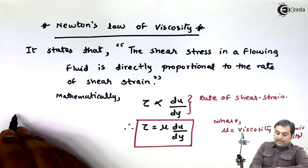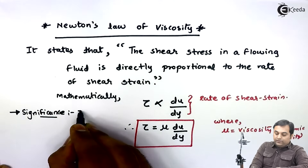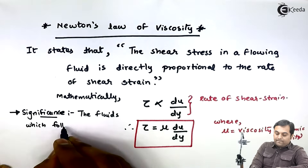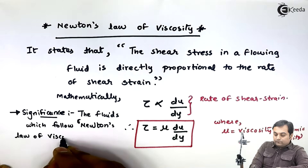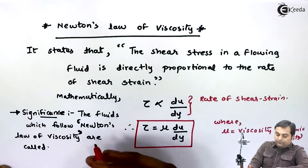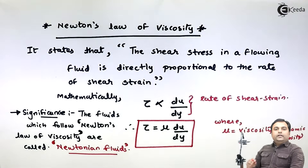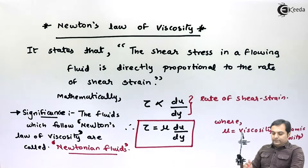This relationship is called Newton's law of viscosity. Its significance is that fluids which follow Newton's law of viscosity are called Newtonian fluids. If in a flowing fluid the shear stress is directly proportional to the shear strain, the fluid is following Newton's law and is called a Newtonian fluid. So here we have seen what is the meaning of Newton's law of viscosity.